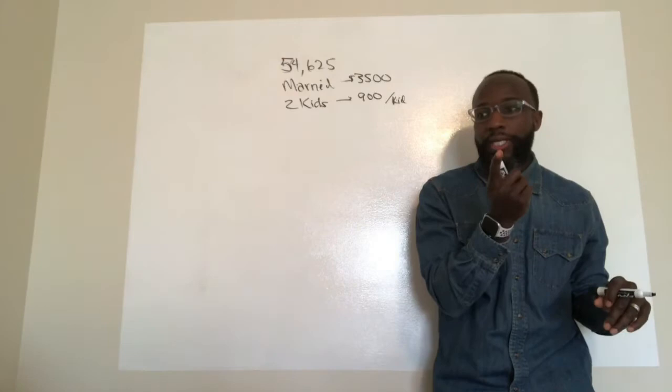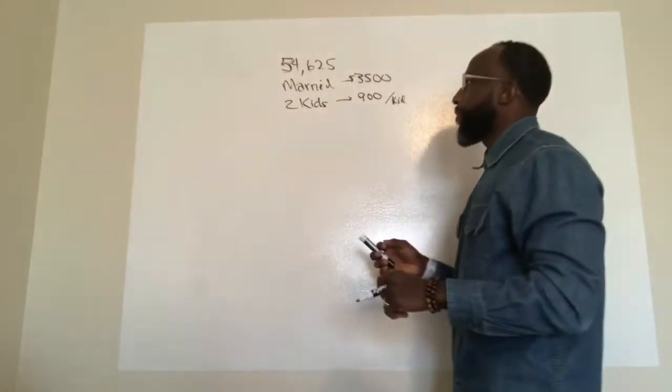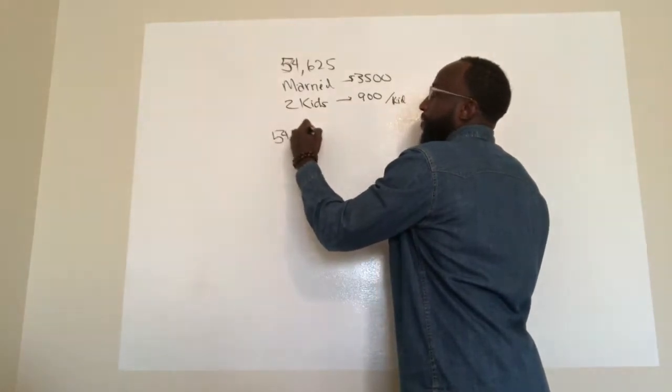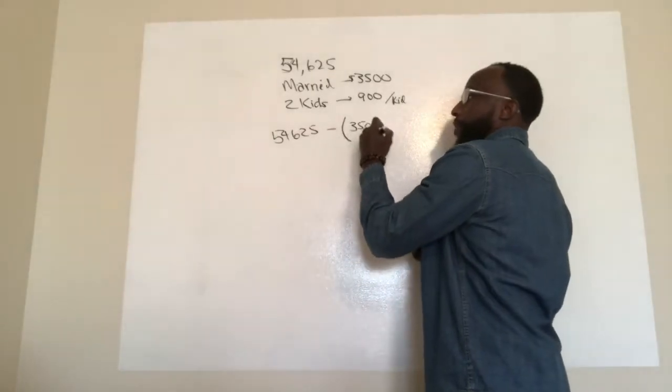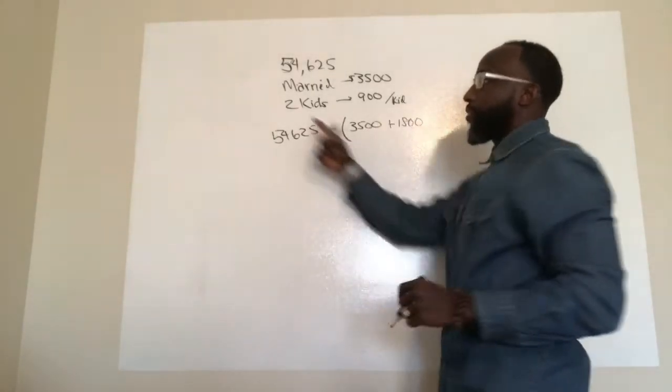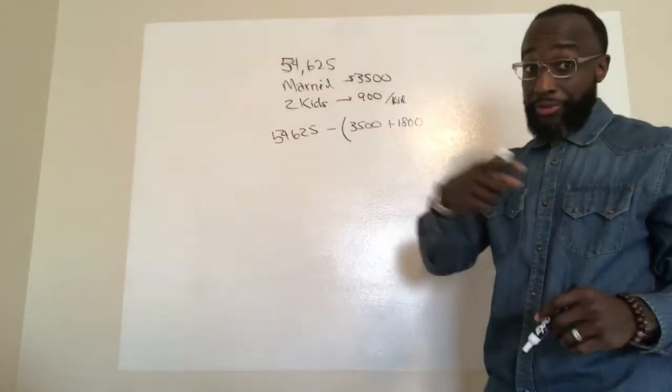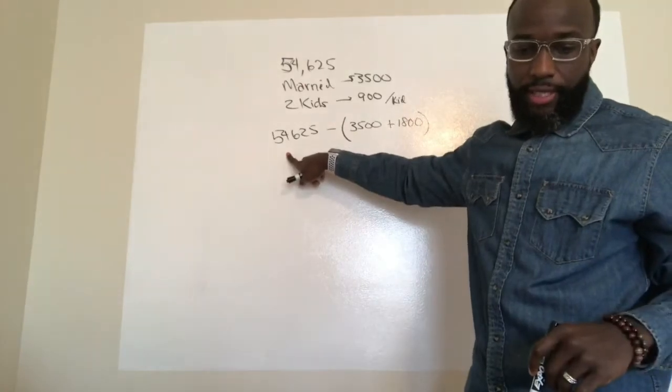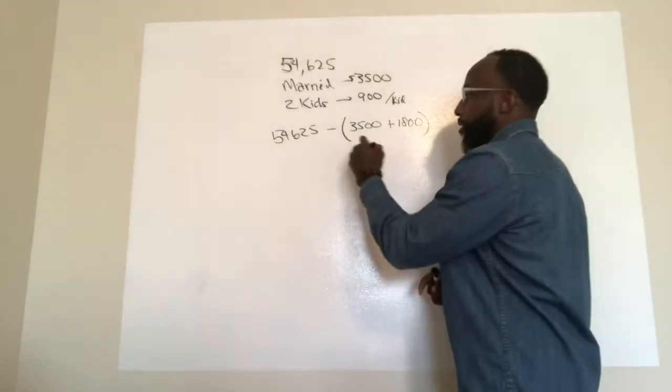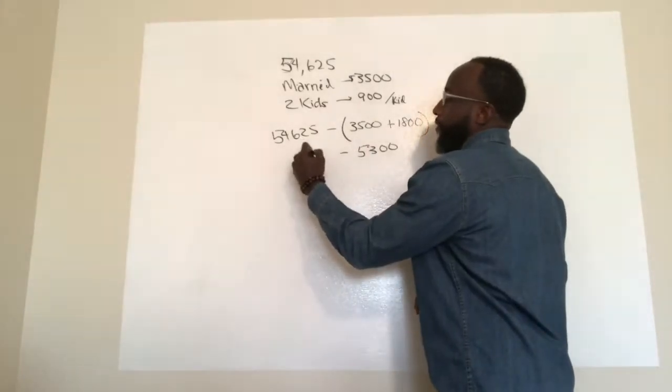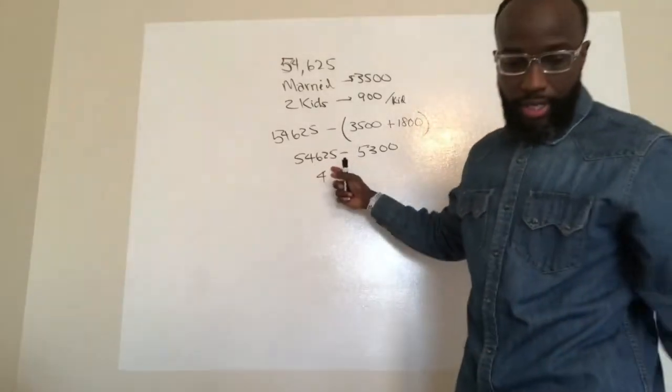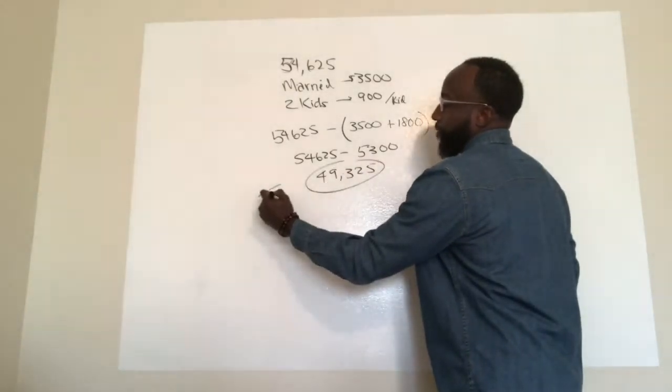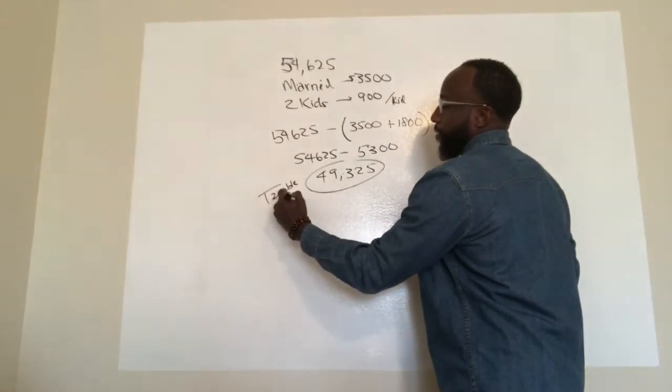So to figure out your taxable earnings, or your taxable income, you would subtract these deductions from this $54,000. So it would be $54,625 minus $3,500 for being married, plus $1,800 because we got two kids. Nine times two, yeah $1,800. Then we'll do the math. So we'll subtract this amount from the $54,000 and we'll end up with, let's go. So you add these together, it's $53,000. So it's $54,625 and you subtract those two, and you get $49,325. That's your taxable income in the state.